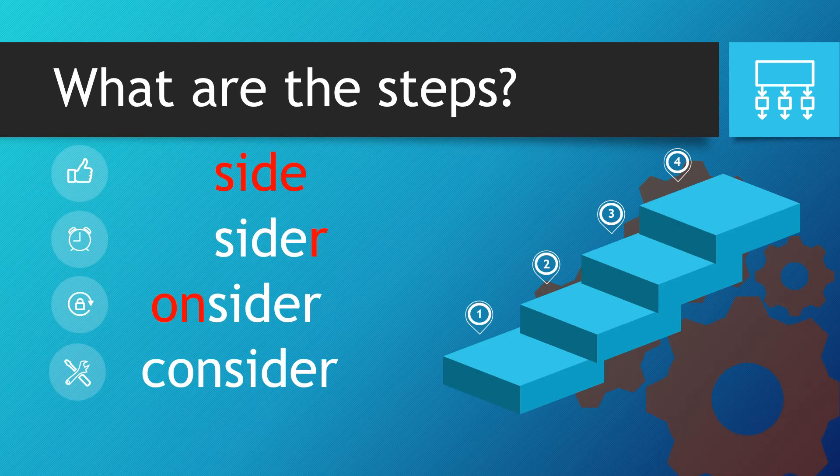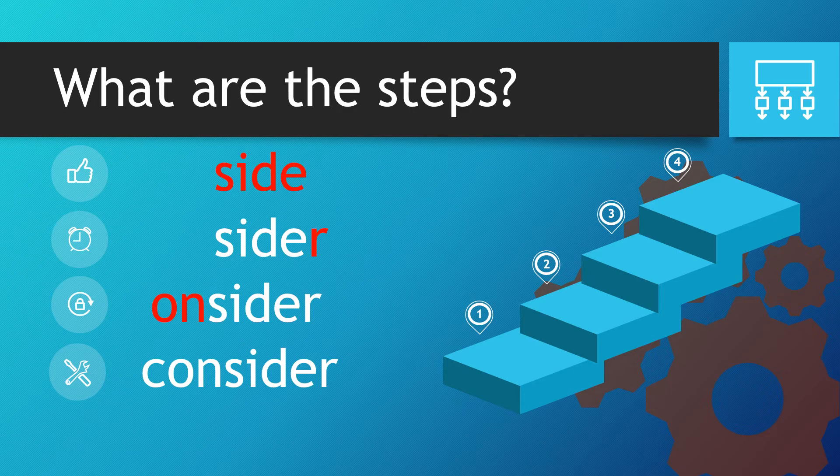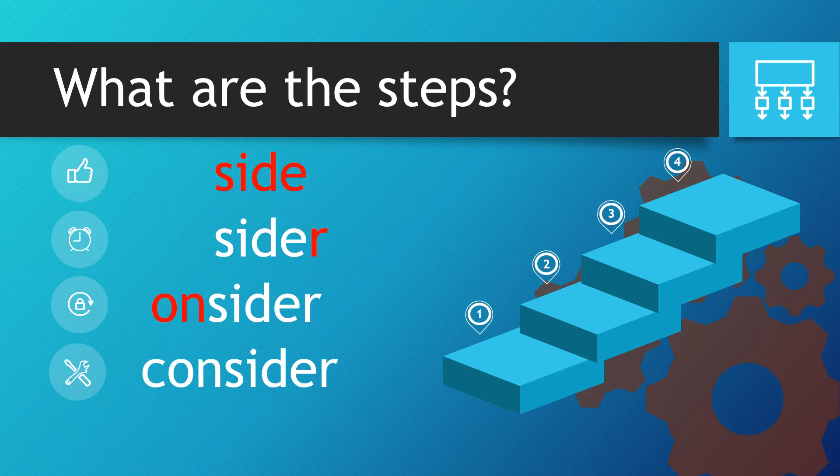So let's explore the steps for the word consider. We start off with that simple word side. The R comes on to the end. In front of side we have the word on and that C sound which you can clearly hear comes up right at the start.